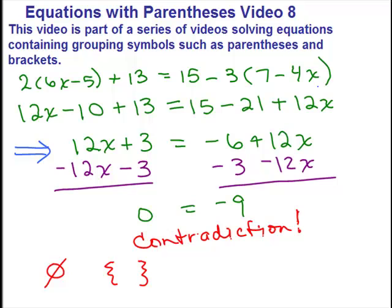So we call that a contradiction. These are a couple special cases when you're solving equations where you might get something that's always true. That's called an identity so the solution's all real numbers. Or if you get something that's always false, this is always false right there. So that means it's a contradiction in terms and so this is our solution set.